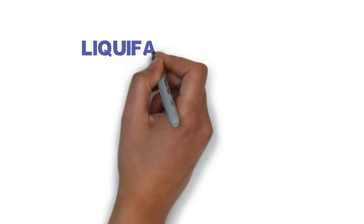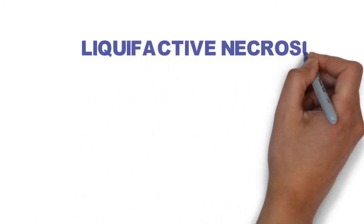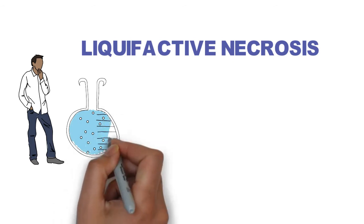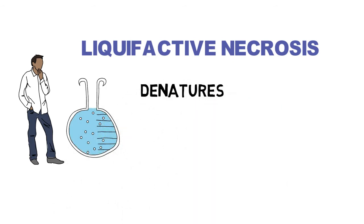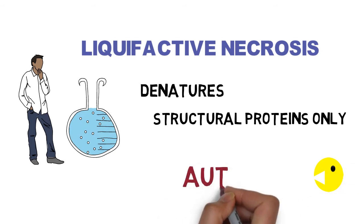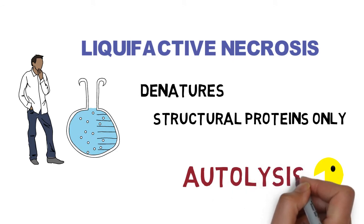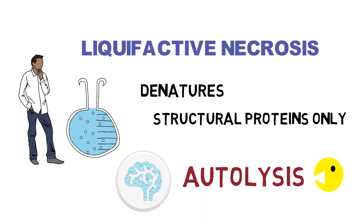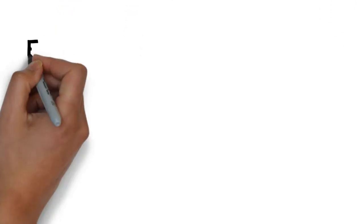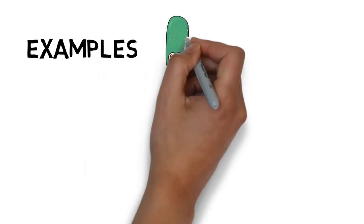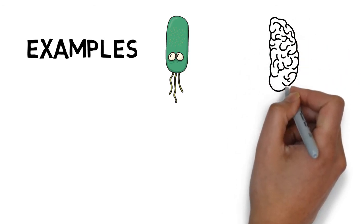The second pattern is liquefactive necrosis. 'Liquefactive' means the act or process of making liquid. In this pattern, cell injury denatures the structural proteins but does not denature the cell's own enzymes. These enzymes then start digesting the dead cells, a process also known as autolysis. The enzymes transform the tissue into a liquid viscous mass. Examples include bacterial infections and ischemia of the central nervous system.